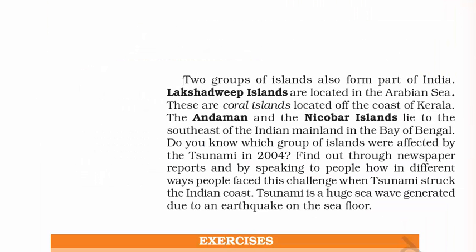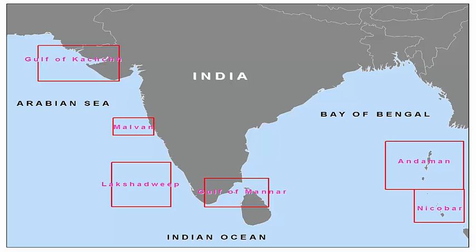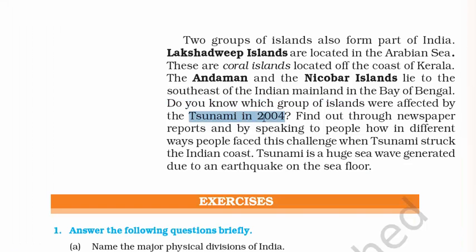India has two groups of islands: Lakshadweep Islands, located in the Arabian Sea, and the Andaman and Nicobar Islands in the Bay of Bengal. Lakshadweep is famous for coral islands and is located off the coast of Kerala. Corals are found in the Gulf of Kutch near Gujarat, Lakshadweep, the Gulf of Mannar between Sri Lanka and Tamil Nadu, and the Andaman and Nicobar Islands. The Andaman and Nicobar Islands were affected by the 2004 tsunami, which came from the southeastern part.